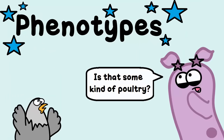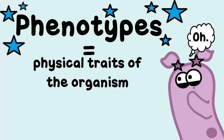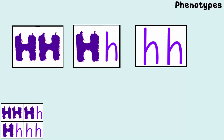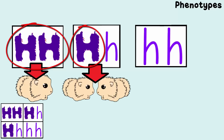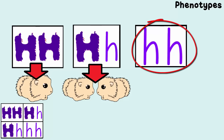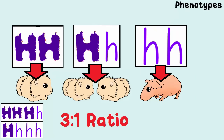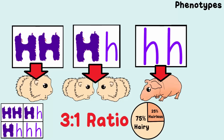What about the phenotypes? I like to think that 'pheno' sounds like 'physical,' so the phenotype is the physical traits of the organism — in this case, whether they have hair or not. Any babies with a capital H have a dominating allele and will have hair. The babies that are capital H, capital H, or capital H, lowercase h all have hair — that's three of them. The homozygous recessive baby, lowercase h, lowercase h, has no dominant allele present, so that baby would be hairless. The phenotype ratio is 3 with hair to 1 hairless, or 75% hair and 25% hairless.